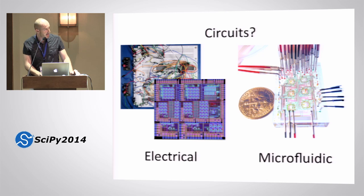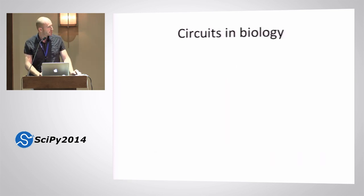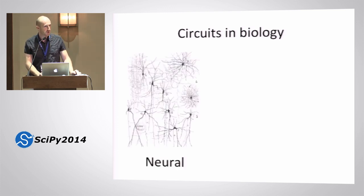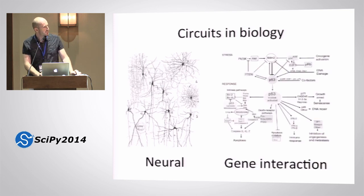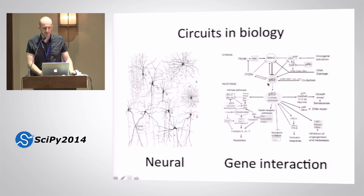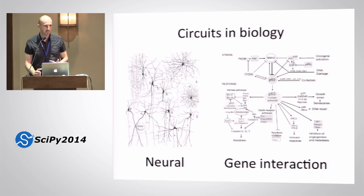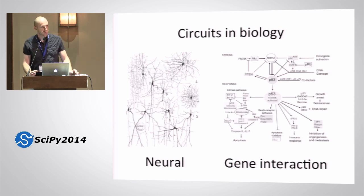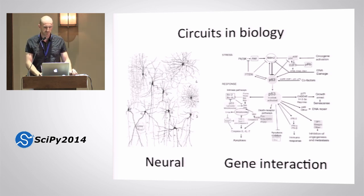Another example of engineered circuits are microfluidic circuits, which are pretty cool. Then there are also naturally occurring circuits — everybody has seen pictures of neurons in the brain. And there are more abstract circuits that people draw to describe gene interactions, which you could argue whether they're really circuits, but people draw these diagrams and use them to understand what certain processes involve and to target how to affect certain parts of the metabolism in a very specific way.